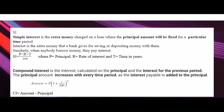Compound Interest is the interest calculated on the principal and the interest for the previous period. The principal amount increases with every time period as the interest payable is added into the principal. The formula for amount in the case of compound interest is: Amount equals P into 1 plus R by 100 to the power N, where N is time in years. The compound interest is calculated by subtracting the principal money from the amount.